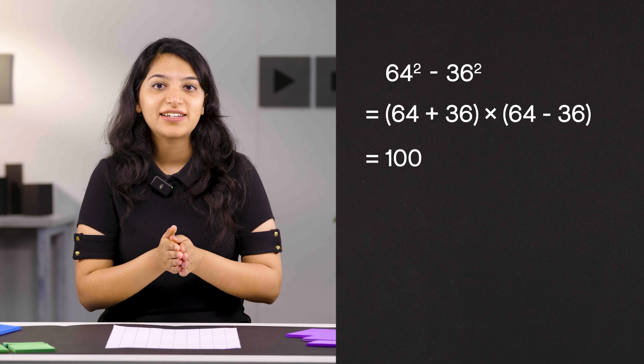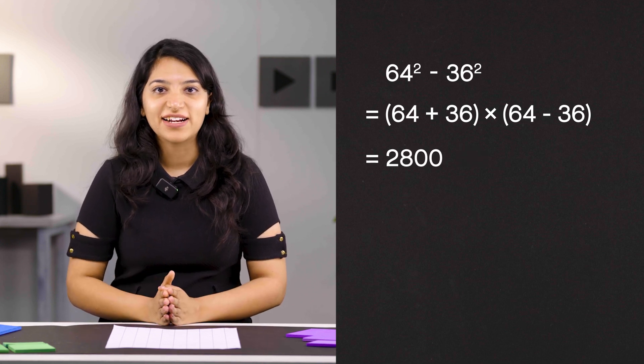What's 64 squared minus 36 squared? You don't need to calculate the squares. Simply find the product of 64 plus 36 and 64 minus 36. That's 100 times 28 or 2800.